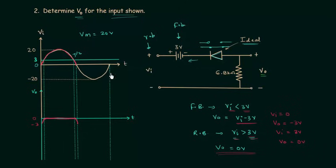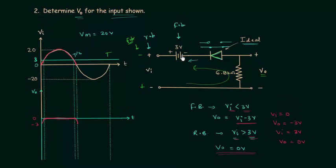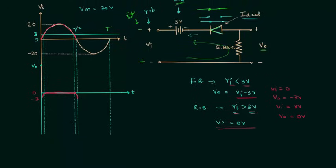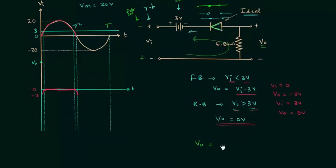For the next half cycle from T/2 to T, minus-plus is the polarity of VI and the direction of current is anticlockwise, matching the direction of the arrow in the diode symbol, so VI is forward biasing the diode. This 3V DC supply is also forward biasing the diode, so the diode is forward biased for this entire half cycle. Replacing it with a short circuit and applying Kirchhoff's voltage law: VO = −VI − 3V. When VI = 0, VO = −3V.